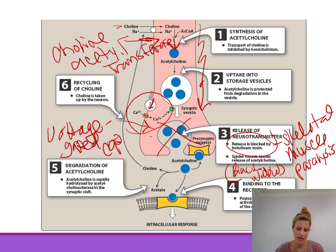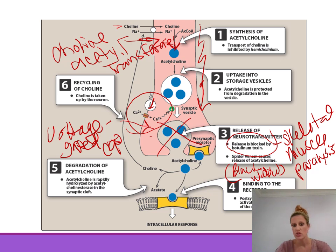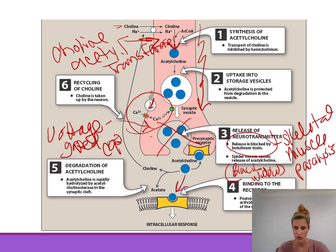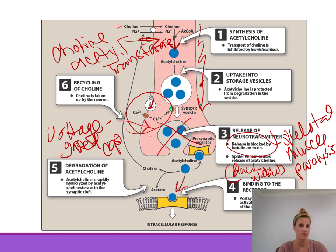Once acetylcholine is released into the synaptic cleft, it travels and binds to its receptors. There are some presynaptic receptors it can bind to, but we focus on its binding to postsynaptic receptors on our target or effector cells — skeletal muscle in the somatic system, or smooth muscle and glands in the parasympathetic nervous system.